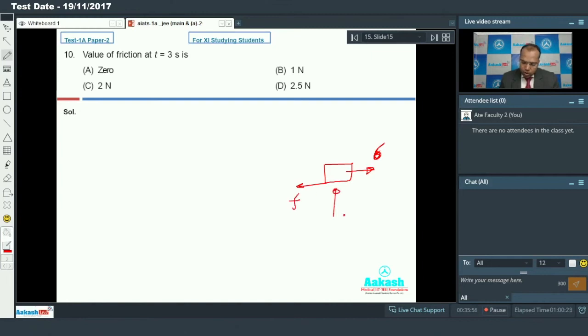In that moment, the normal reaction will be at T equal to 3 seconds. So the maximum value of friction is 0.5 into normal reaction, so it will be 1 newton. Since 6 newton is more than 1 newton, the block is going in this direction. So maximum friction will be equal to 1 newton, and option B is the correct answer.